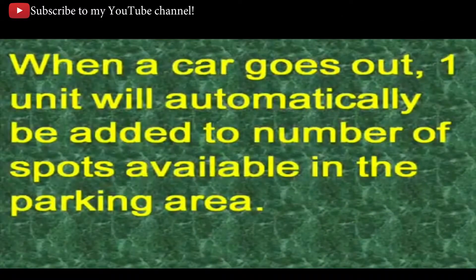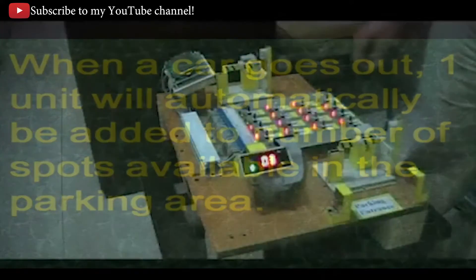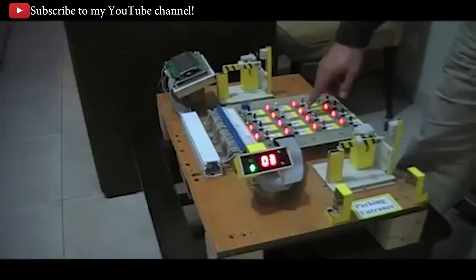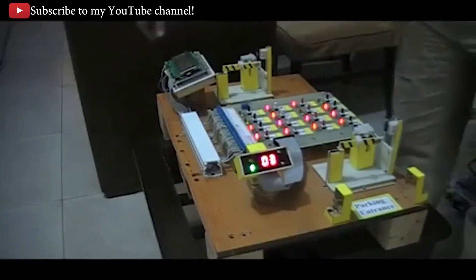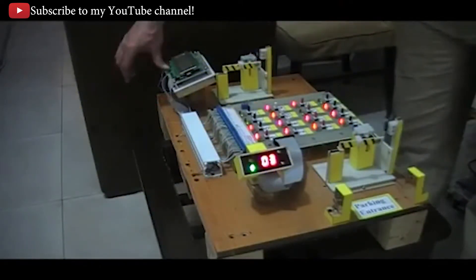When a car goes out, one unit will be automatically added to the number of available spots in the parking area. When repeating the same action, the number of available slots goes from 3 to 4.